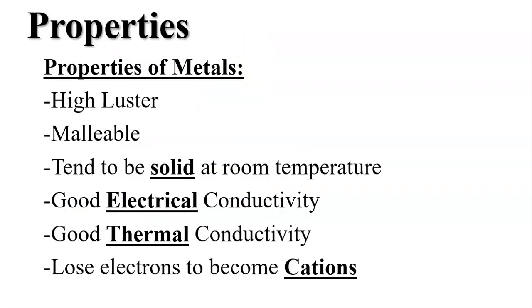Let's review your properties of metals. Remember, they have high luster, they're malleable, they tend to be solid at room temperature, they have good electrical conductivity and good thermal conductivity, and they lose electrons to become cations.